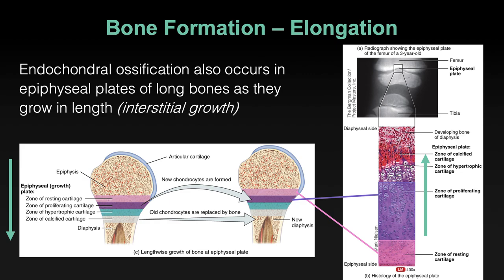The chondrocytes start to proliferate. The next area is where they start to grow — the zone of hypertrophic cartilage. The name tells you what's going on: hypertrophy is the growth in size of a tissue. You can see those stacked coins are no longer so linear and striated — now every cell is starting to bubble and enlarge, crowding out the connective tissue in the cartilage.